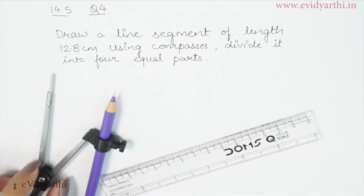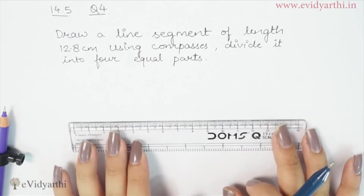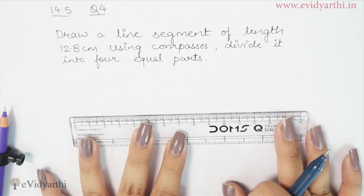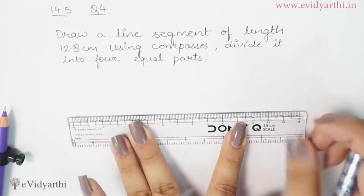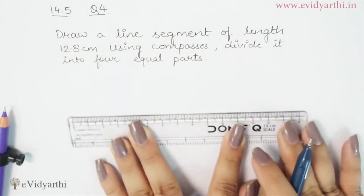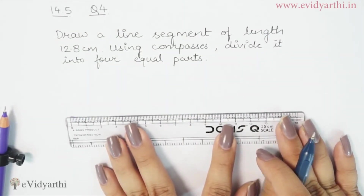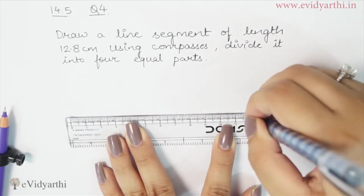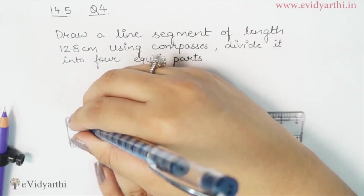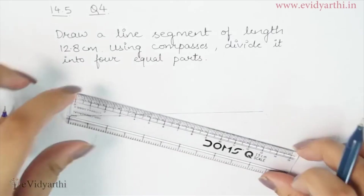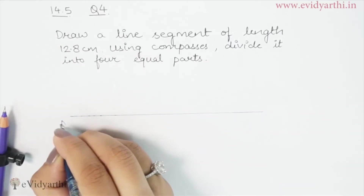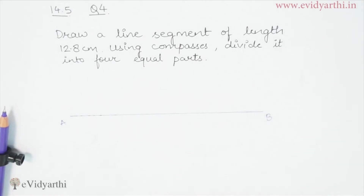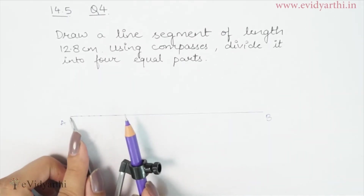We will draw the 12.8 cm line segment, starting here. Let's name it A and B. Now, to divide this into 4 equal parts, we will draw the perpendicular bisector. First, we open the compass to more than half of AB, then draw arcs from both A and B above and below the line to find the midpoint.